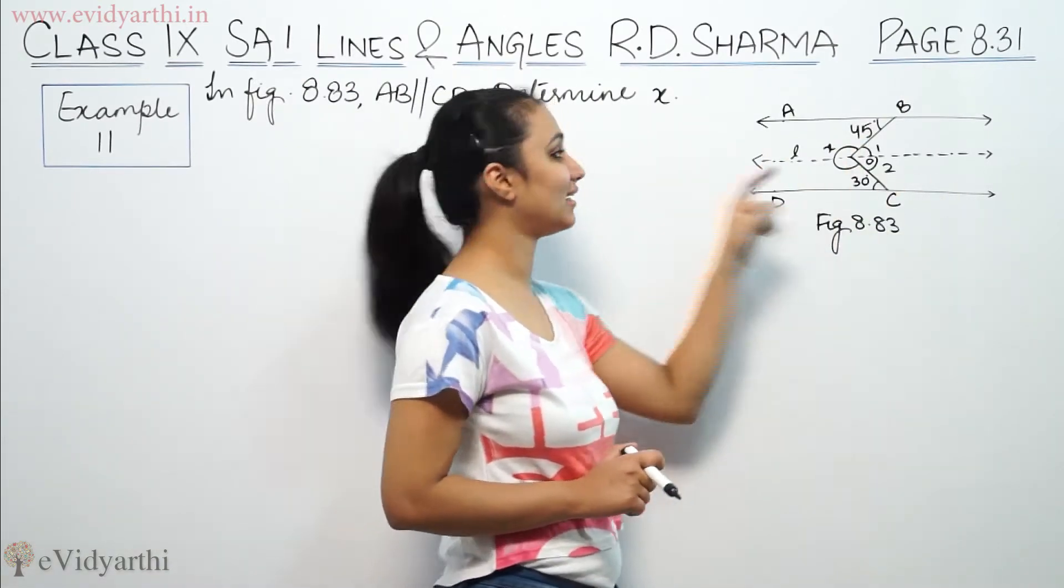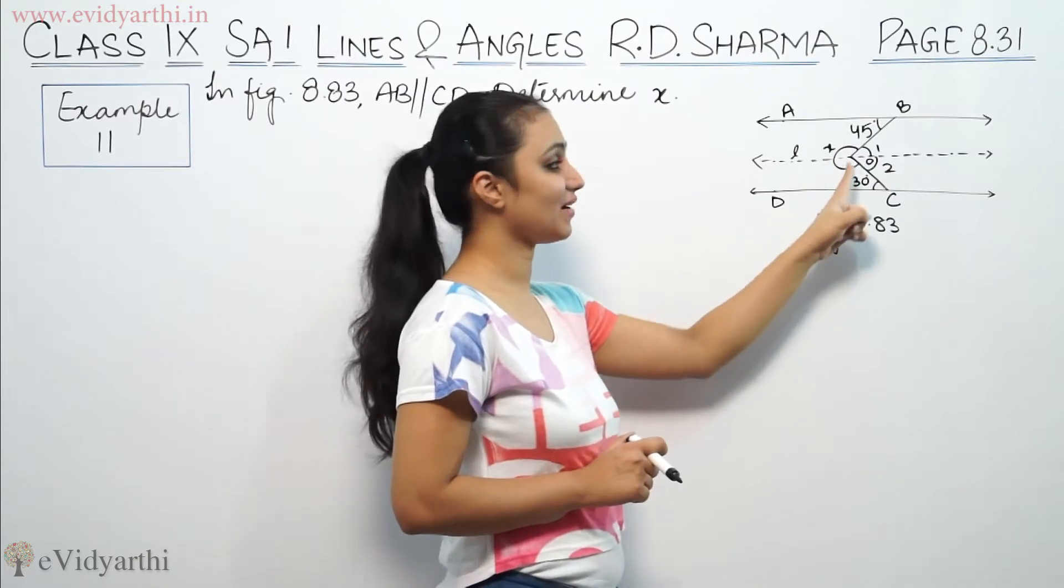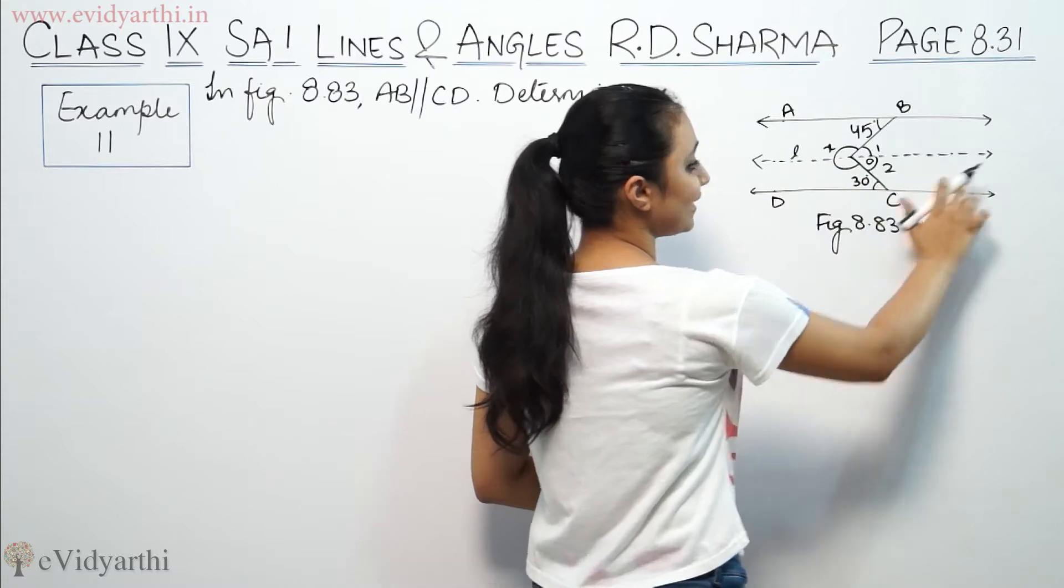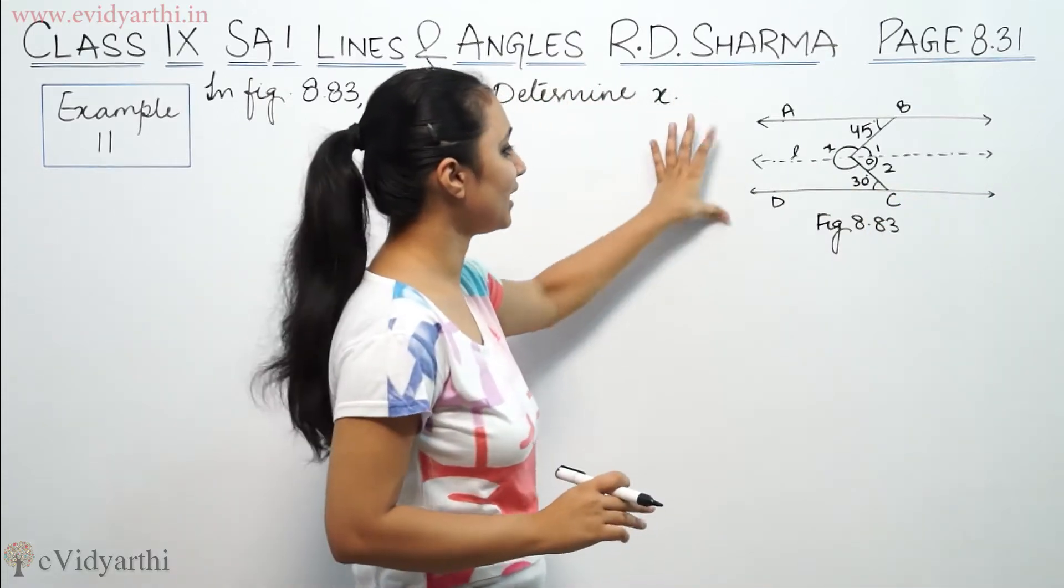We have to determine x. So if AB is parallel to CD, we draw a line from construction - line L parallel to both AB and CD.